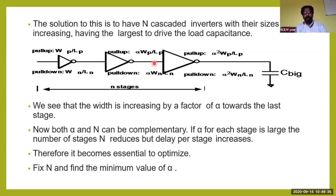The width of the transistors increases by a factor of alpha at each stage. The first stage has width W, the next has alpha×W, and the next has alpha²×W. Here Wp indicates the width of the PMOS pull-up transistor, and Wn is for the NMOS pull-down transistor. A CMOS inverter has one PMOS and one NMOS. Both alpha and N can be complemented — if one increases, the other decreases.